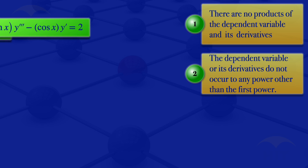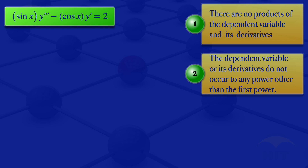Moving to the third equation: sin(x) multiplied by y triple-prime minus cos(x) multiplied by y prime equals 2. In this case we see that there are no products of the dependent variable and its derivatives, so condition 1 is satisfied. And the dependent variable and its derivatives do not occur to any power other than the first power, so condition 2 is also satisfied. We therefore conclude this differential equation is linear.